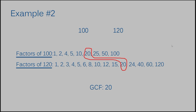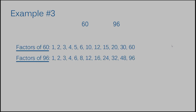Let's move on to example number 3. We have 60 and 96. The factors of 60 are listed here and the factors of 96 are listed here. Let's start from the end — get the greatest number and see if it's in the other row. It does not matter which side you start with. Starting with 60, I look on the other row: any 60s? No. Any 30s? No. Any 20s? No. 15? Nope. 12? Yes. 12 is our greatest common factor between 60 and 96.